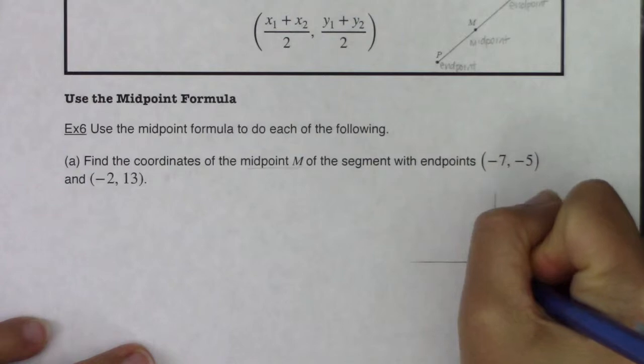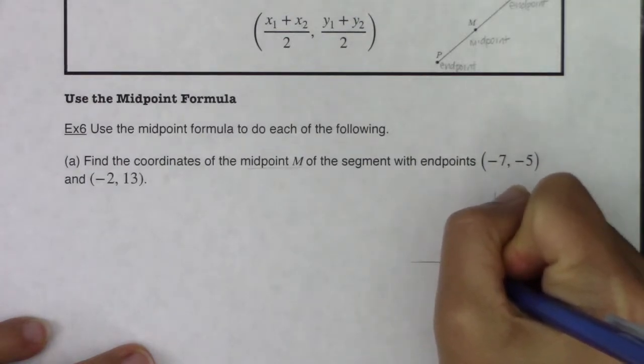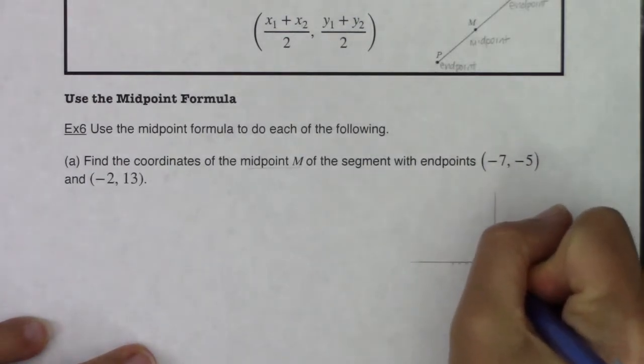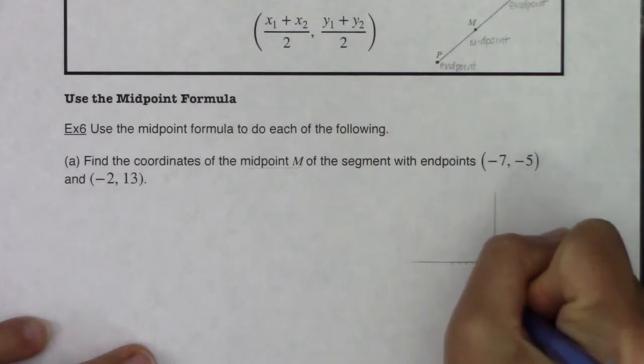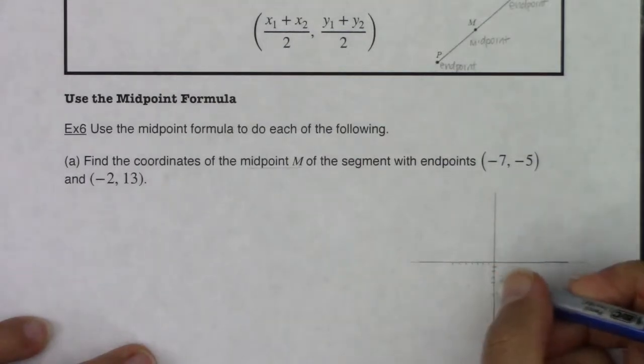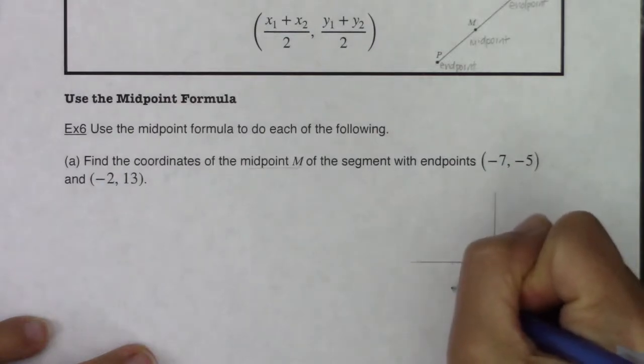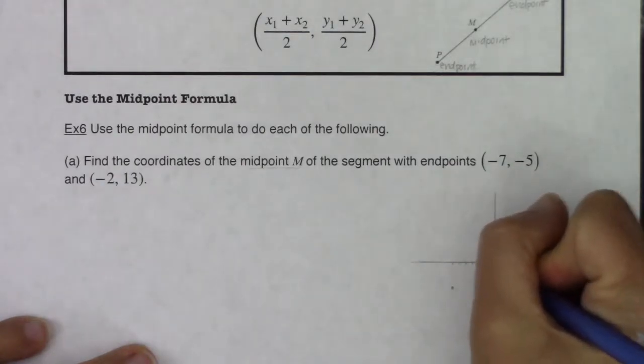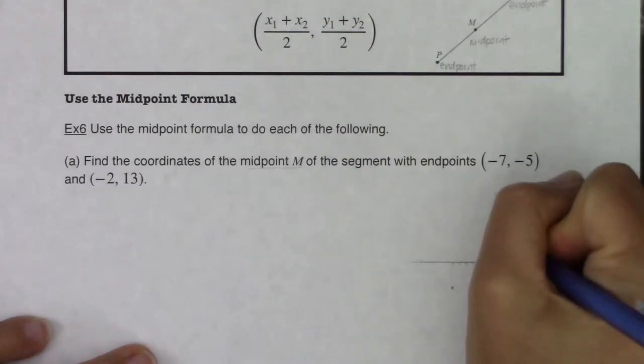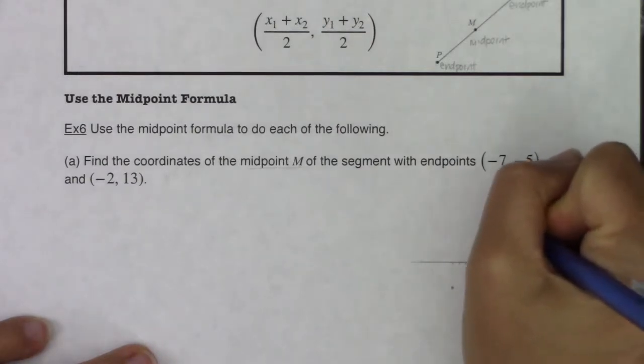So negative 7, 1, 2, 3, 4, 5, 6, 7. And then negative 5, 1, 2, 3, 4, 5. So negative 7, negative 5, and then negative 2, 13. So 1, 2, 3, 4, 5, 6, 7, 8, 9, 10, 11, 12, 13.